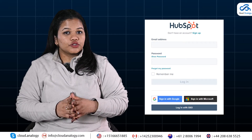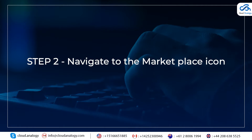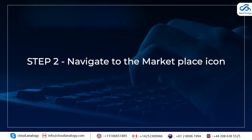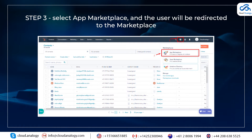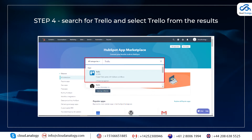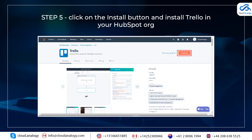Step 1: Login to the website with valid credentials. Step 2: Navigate to the Marketplace icon. Step 3: Select App Marketplace and the user will be redirected to the Marketplace. Step 4: Search for Trello and select Trello from the results. Step 5: Click on the Install button and install Trello in your HubSpot organization.